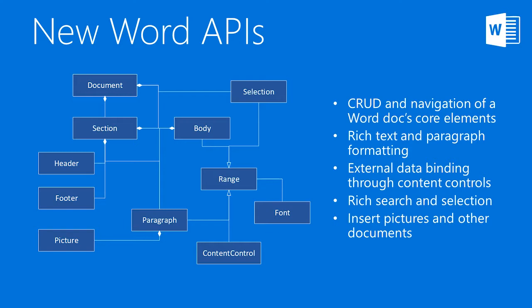Our section object, as you can see on this diagram, is in the strict Word object model sense the object that provides entry points for the headers and footers in the document. This object was not available previously, and it was critical to include given that in enterprise scenarios, 90% of document customizations happen in the header. So it was critical to provide entry points to primary, first, and even-page headers and footers. Future additions will include other section-related features like defining page layouts, margins, and so on.